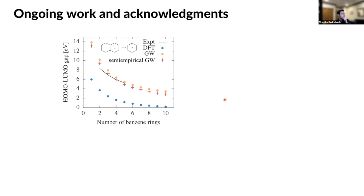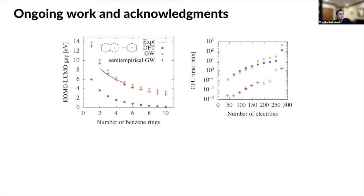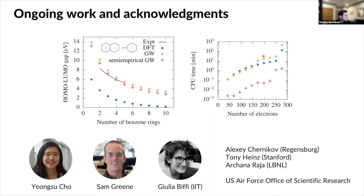With that, let me wrap up. I'm not going to discuss the work on removing the physical intuition inputs from these models by developing a semi-empirical, no-tuning version of the GW approximation that is very cheap compared to first-principles calculations. Let me just thank the people who did this work: almost everything I talked about today was done by my student Young-Soo Cho. The trion and biexciton work was done by Young-Soo in collaboration with my student Sam Green. The nanocrystal work was done with visiting graduate student Julia Biffey from the Italian Institute of Technology. I also thank the experimental collaborators and the funding source for most of this research.